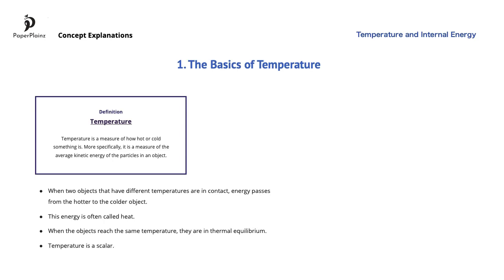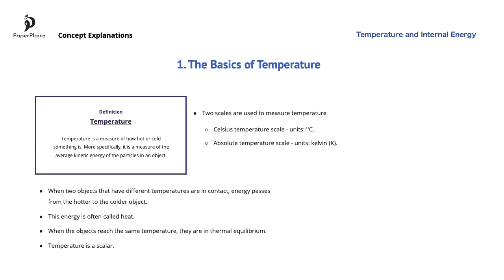Temperature is a scalar quantity, and in physics we use two scales to measure temperature: the Celsius temperature scale, which has units of degrees Celsius, and the absolute temperature scale, which has units of Kelvin or K. In some parts of the world, Fahrenheit is used to measure temperature, but we do not use the Fahrenheit scale in physics.